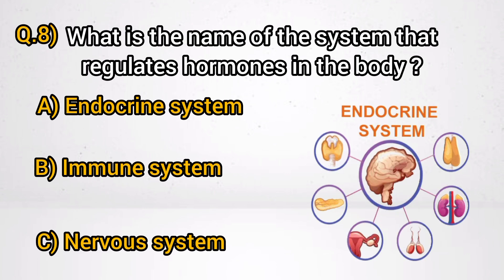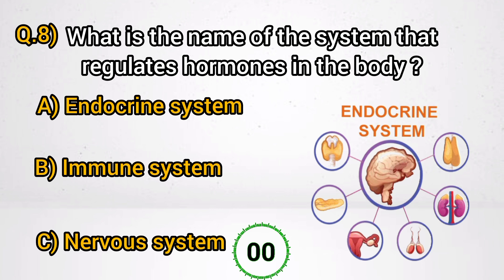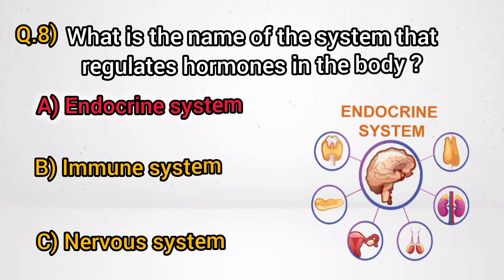Question 8: What is the name of the system that regulates hormones in the body? Answer A: Endocrine system.